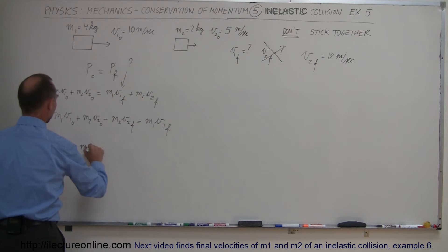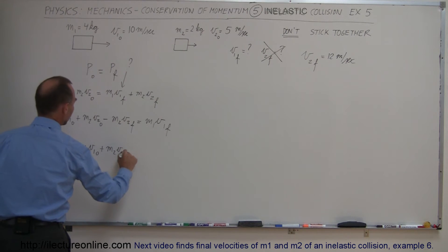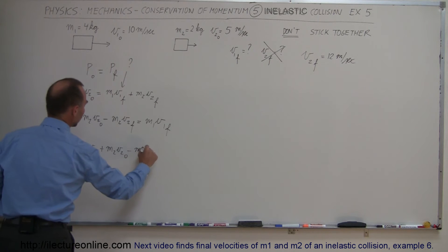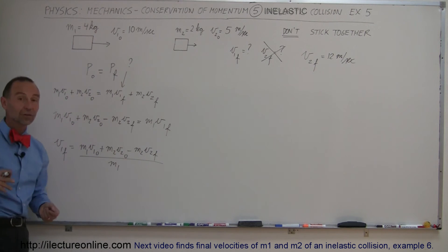So we end up with V1 final is equal to M1 V1 initial plus M2 V2 initial minus M2 V2 final, and the whole thing divided by M1. Now we're ready.